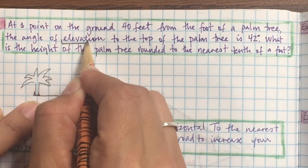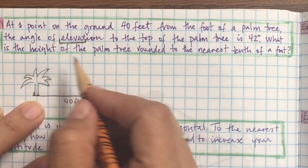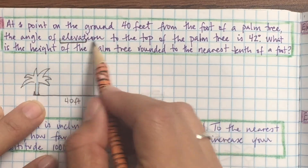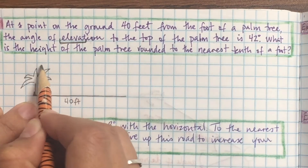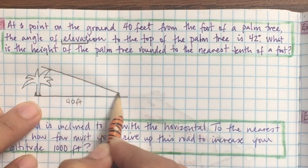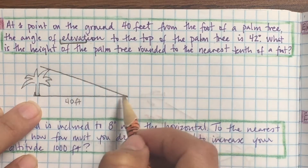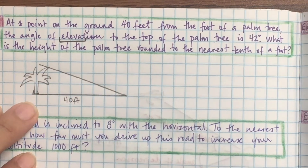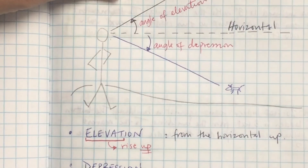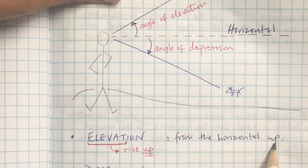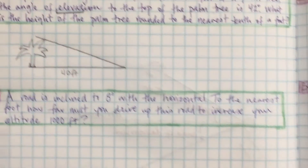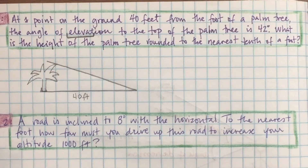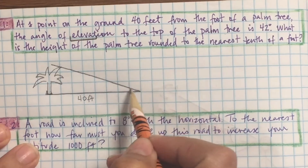The angle of elevation — elevate means rise up, go up — so from the horizontal going up, like you're looking up. The angle of elevation to the top of the palm tree is 42 degrees. From this point to the top of the palm tree, from the horizontal line, the angle of elevation is 42 degrees. Listening check: color in 40 feet on the triangle.